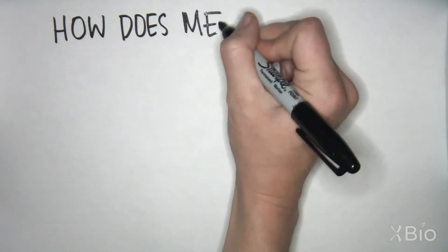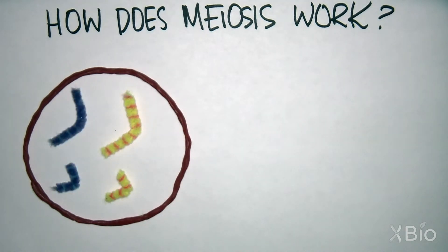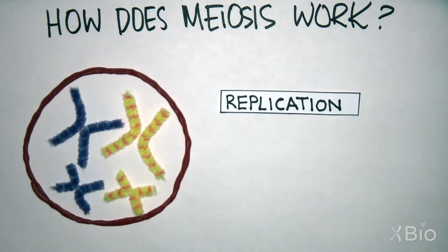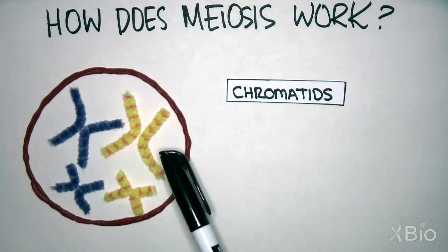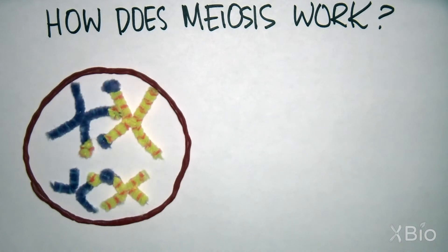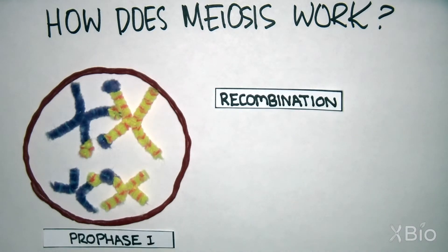Meiosis starts with a cell that contains two copies of every chromosome. Each copy of the chromosome is replicated to double the number of chromosomes. Each identical copy is called a chromatid. The two identical purple chromatids pair up with the two identical yellow chromatids, and this is where swapping of DNA occurs in a crossing over process called recombination.